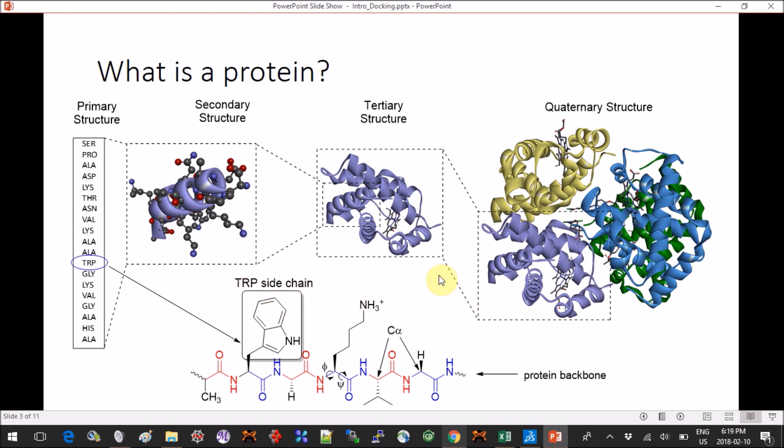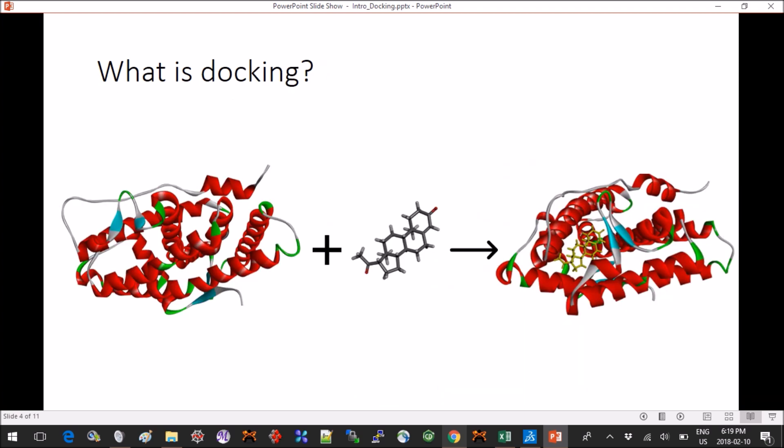Also for amino acids like histidine, you have to think about where the proton actually is, because it can be on the different nitrogen. So keep that in mind.